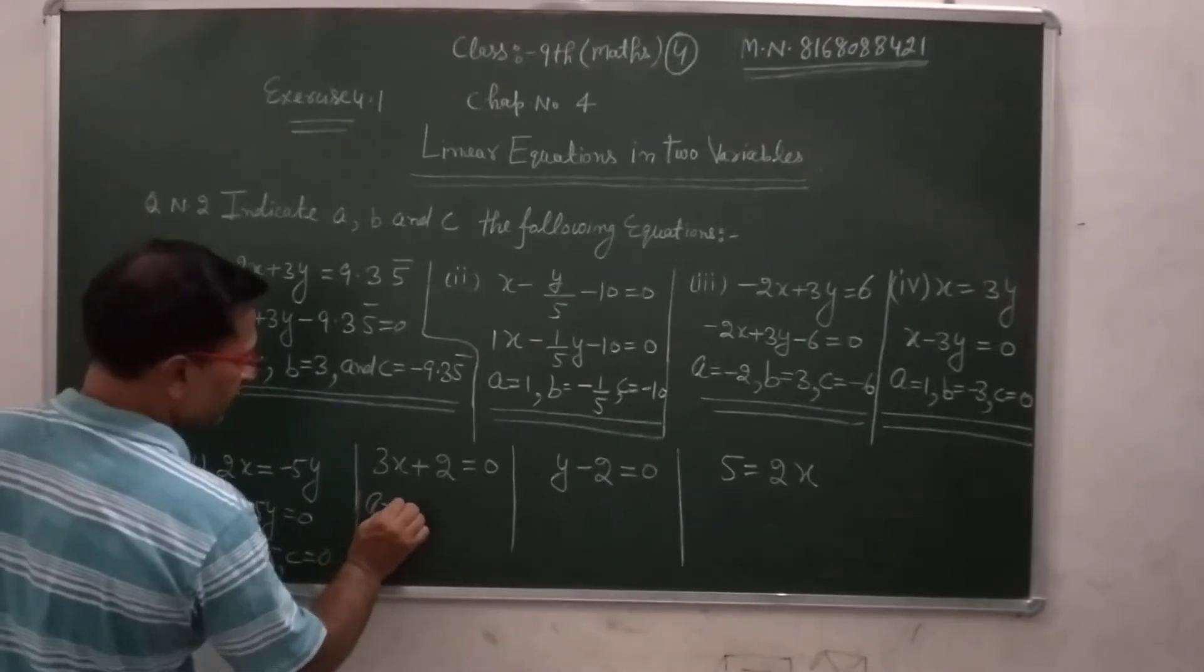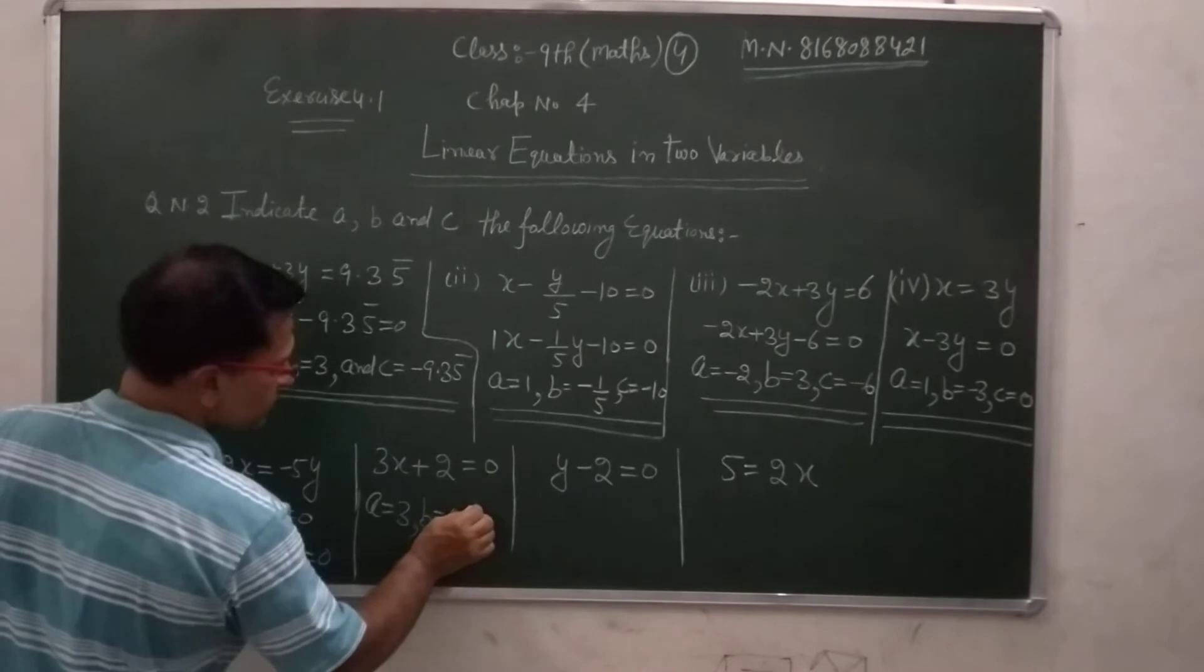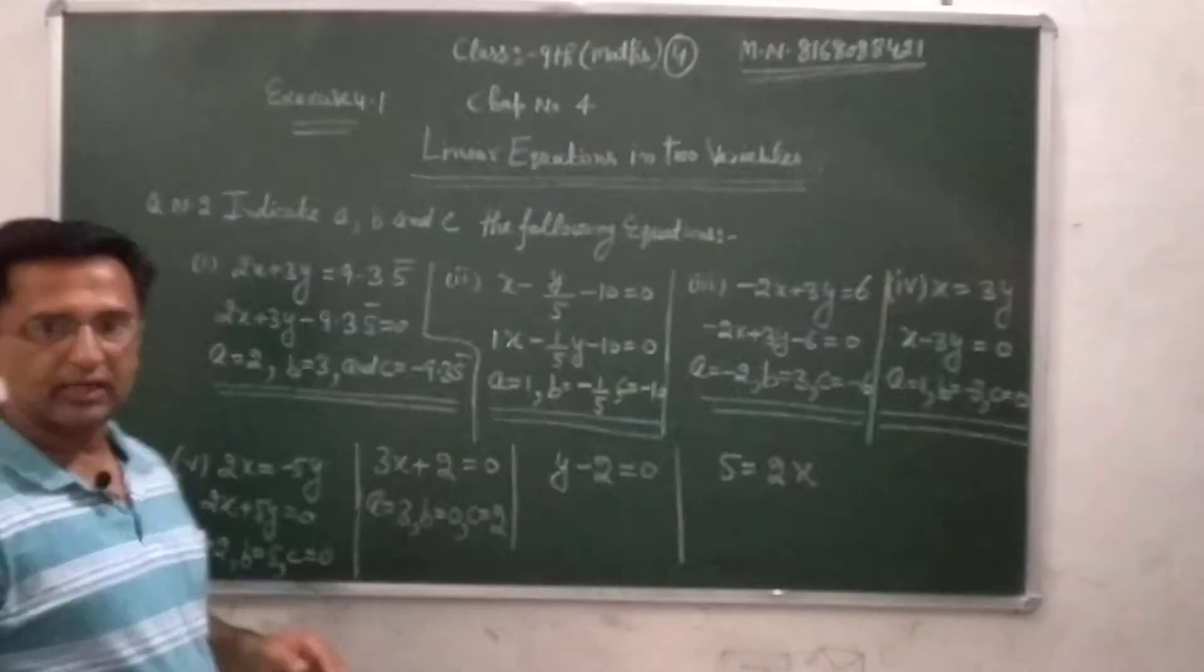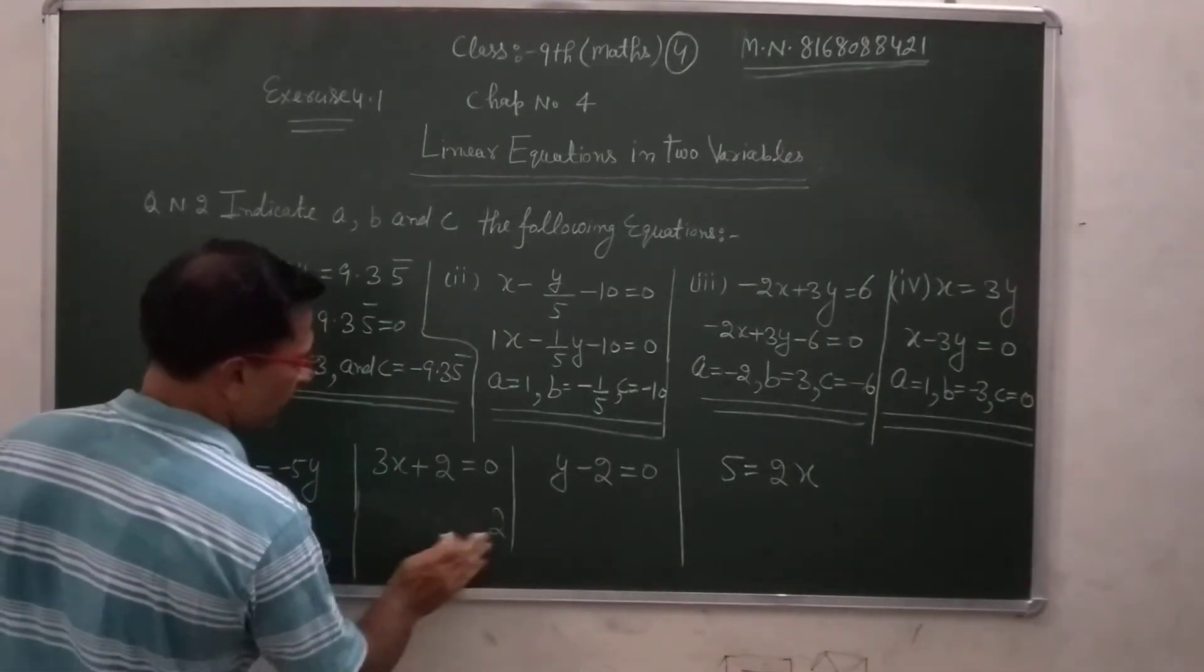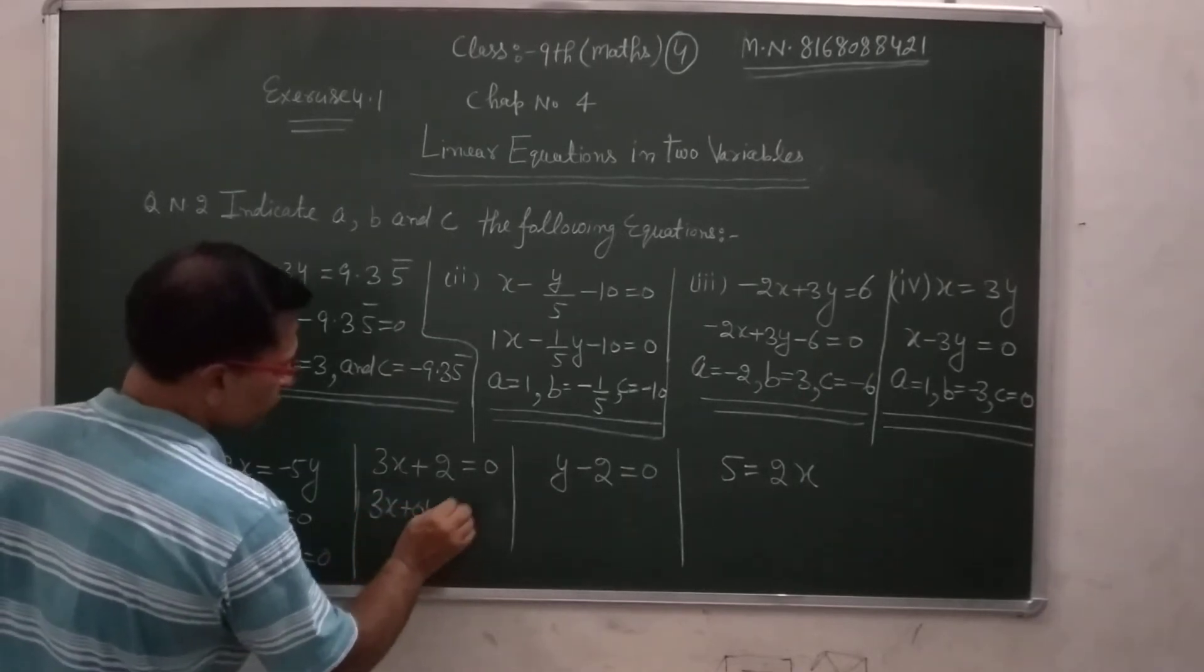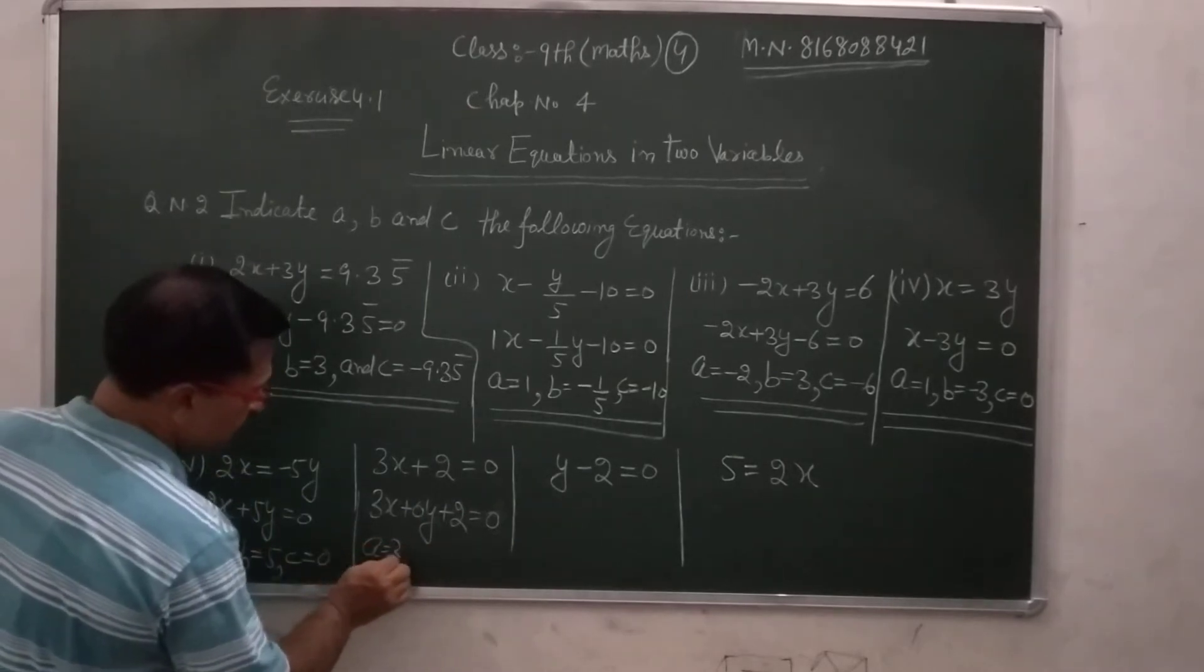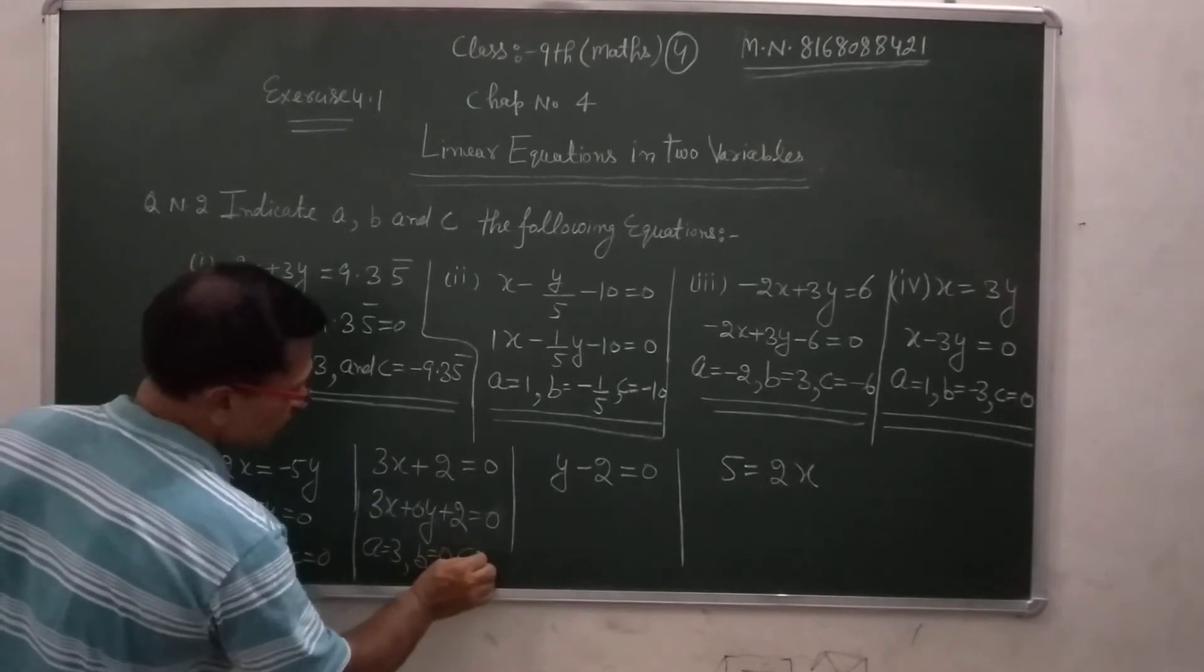A is equal to 3, B is equal to 0, C is equal to 2. Because y term is absent, this is equal to 3, A is equal to 3, B is equal to 0, C is equal to 2.